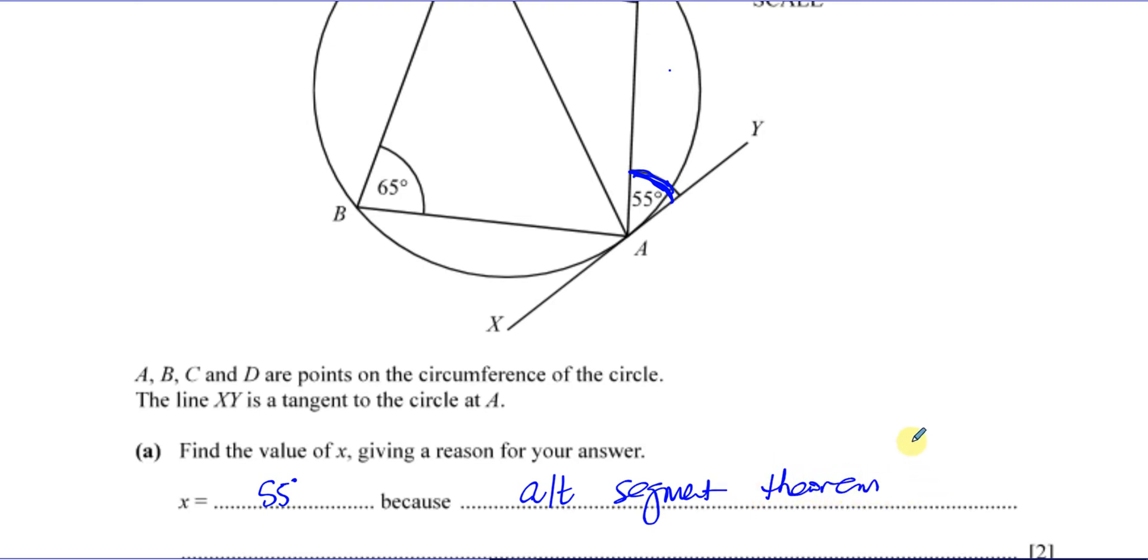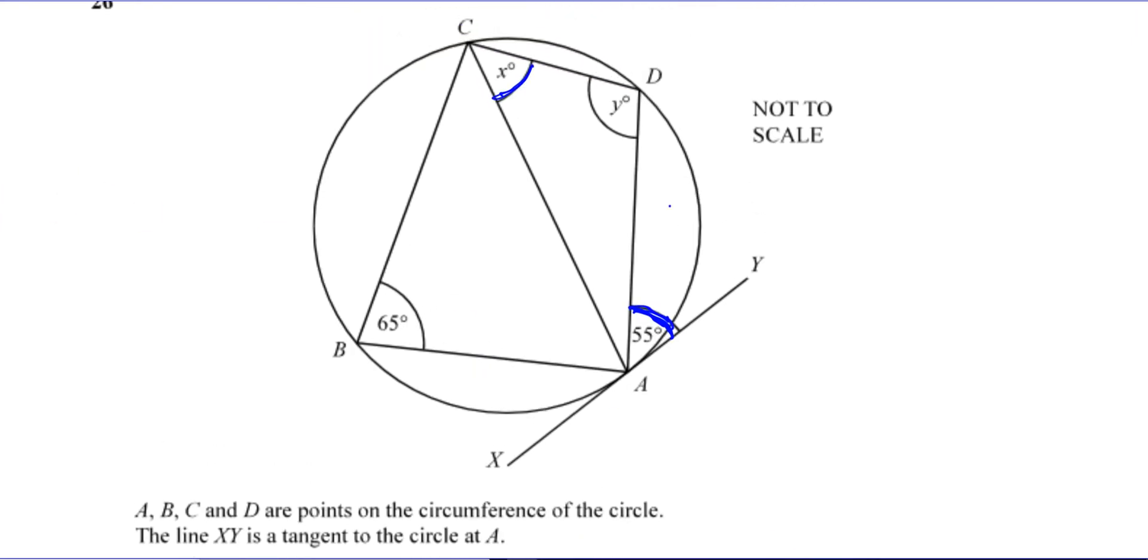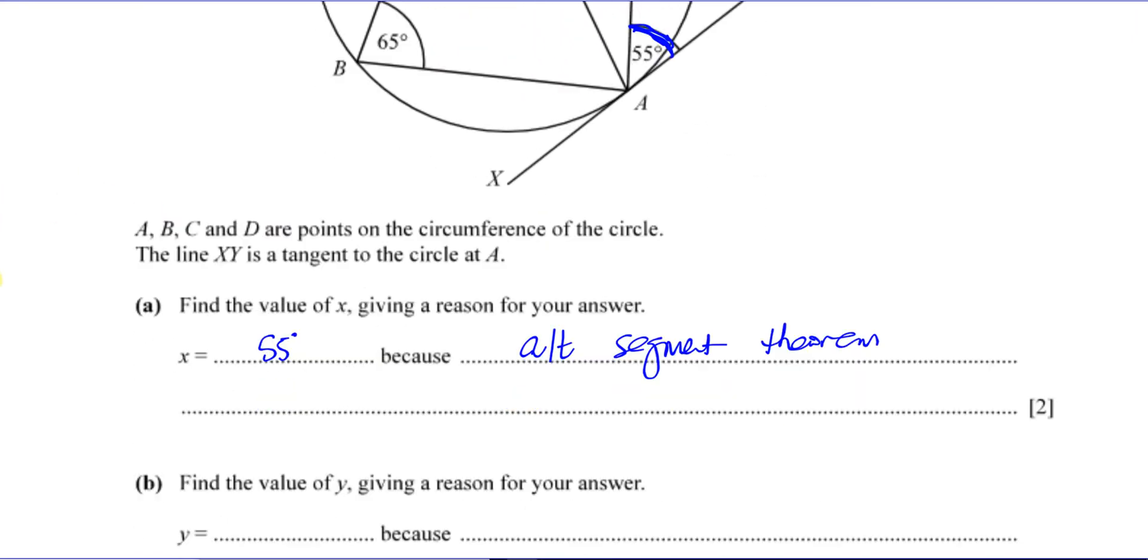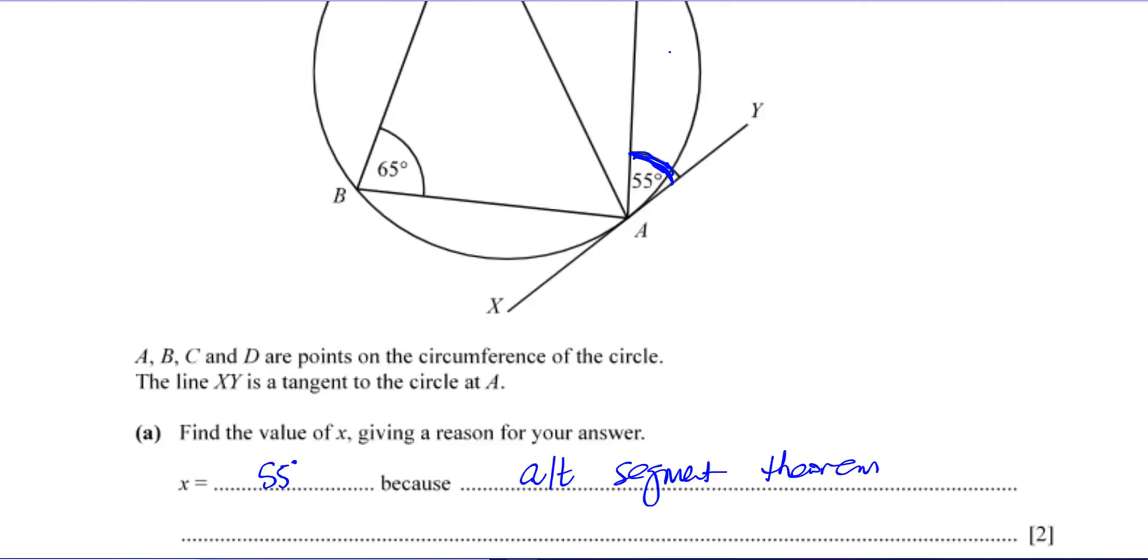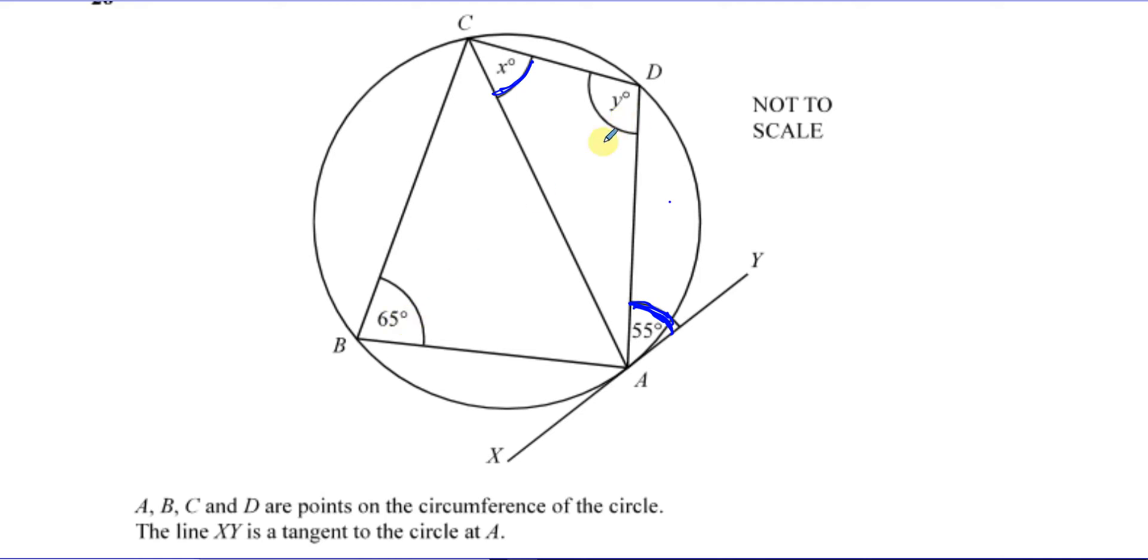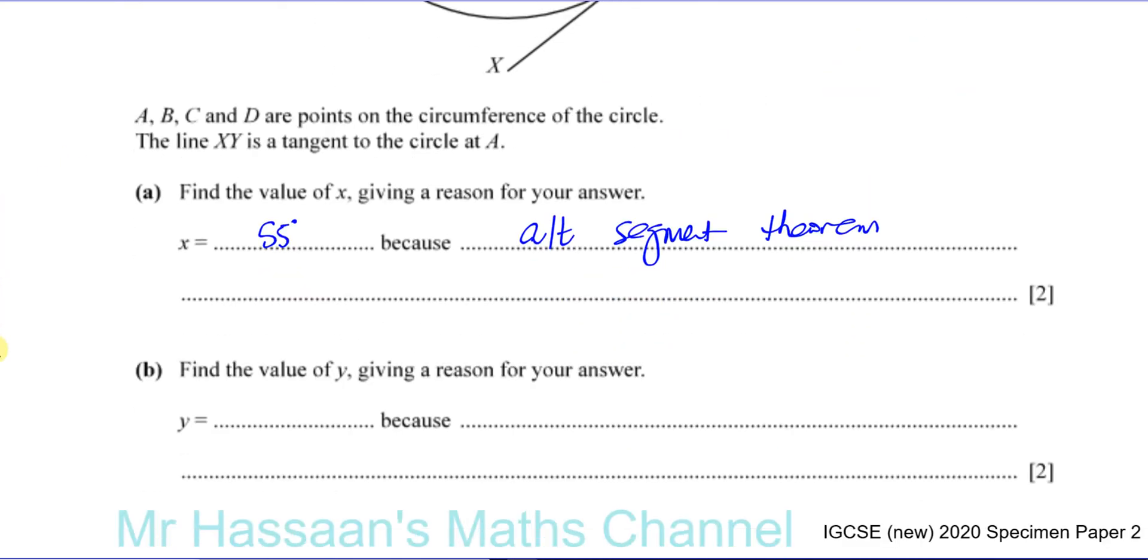I'm going to show you afterwards how to actually find the angle using some other methods. But first of all, it says find the value of Y, giving a reason for your answer. Now, this is pretty simple. This is a cyclic quadrilateral, and Y and 65 are opposite angles in a cyclic quadrilateral. So they add up to 180. So Y is equal to 180 minus 65, which is equal to 115 degrees.